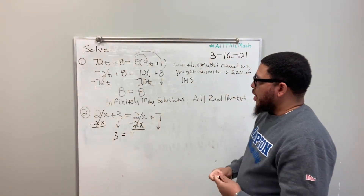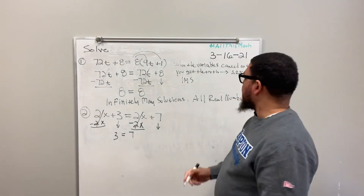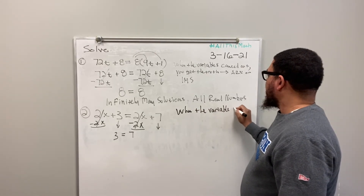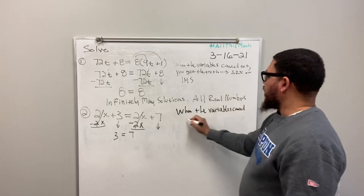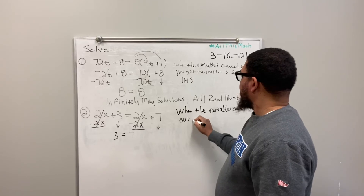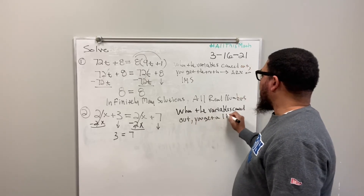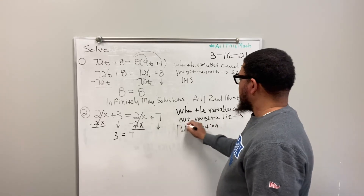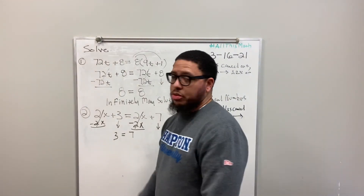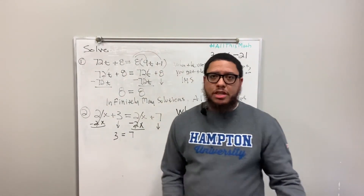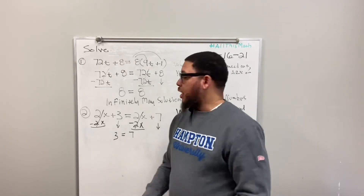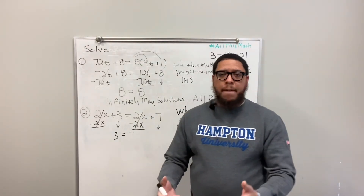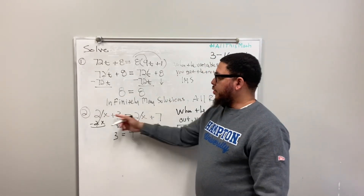This brings me to how to identify the other type of special solution. When the variables cancel out and you get a lie — a false statement — then there is no solution. This problem has no solution because 3 equals 7 is a lie. There is no number in the universe in the real number system that we can substitute in for x that will make this a true statement.